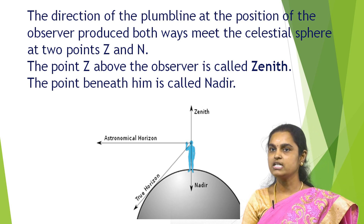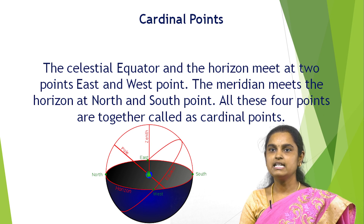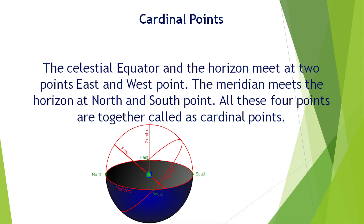The celestial equator and the horizon meet at two points E and W, called the east and west points. Similarly, the meridian meets the horizon at the north and south points N and S. These four points together are called cardinal points.